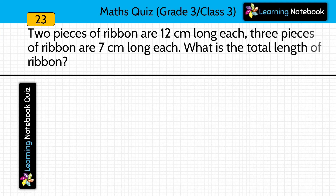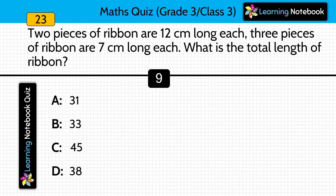2 pieces of ribbon are 12 cm long each and 3 pieces of ribbon are 7 cm long each. What is the total length of this ribbon? Answer is 45 cm. We do 2 x 12 which equals 24, then 3 x 7 which equals 21, and now we add 21 and 24 which equals 45. Total length of this ribbon is 45 cm.